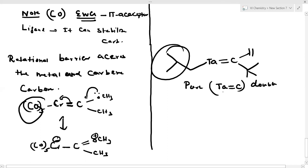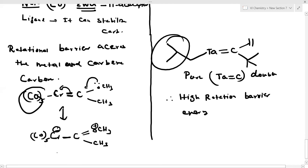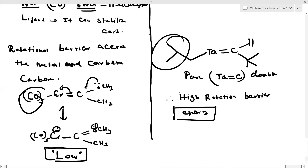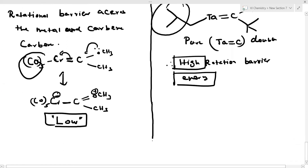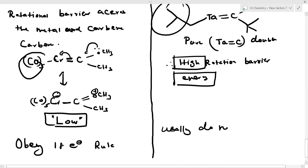The metal-carbon bond in Schrock carbene has double bond character, so there is high rotational barrier energy — you need to give high energy to rotate the molecule. For Fischer carbene, because the double bond becomes partially single bond in character, there is a low rotational barrier — low rotational barrier energy. This is very, very important.